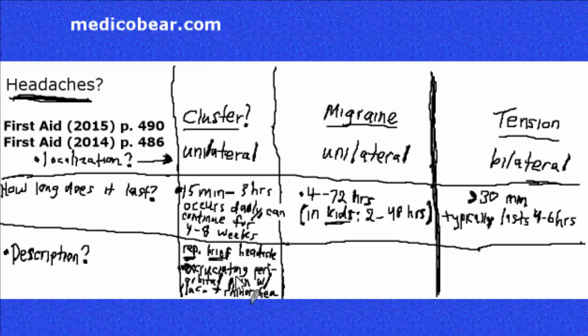When I say periorbital, what I mean by that is that the pain is surrounding or lining the orbit of the eye. Now, what do I mean by lacrimation plus rhinorrhea? Well, lacrimation refers to the flow and secretion of tears. And rhinorrhea simply refers to a condition where the nasal cavity is filled with a significant, more than usual amount of mucus fluid. Just a runny nose.